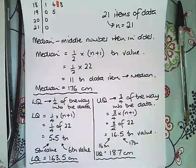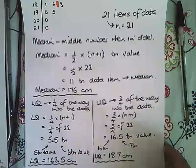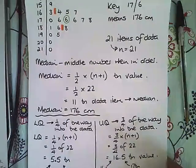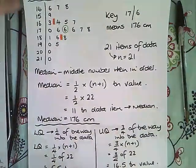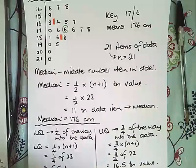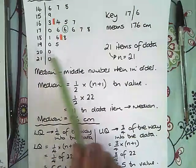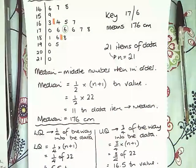Right, so the key points from finding the median and the quartiles from a stem and leaf diagram. First of all you need to know what your stem and leaf diagram is saying to you, and look at the key and make sure you know how the numbers are being represented.